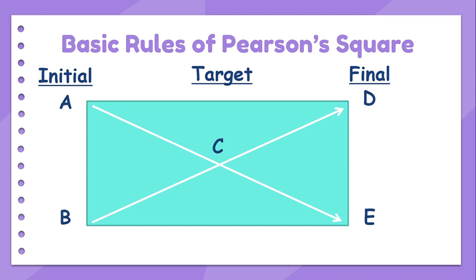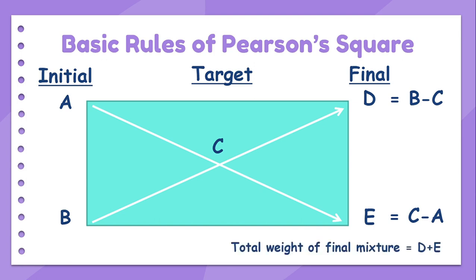We can get D by calculating the difference between B and C. We can get E by calculating the difference between C and A. The sum of D and E is the weight of the final mixture. The values A, B, C, D, and E are usually the concentration of a component expressed in percentage.